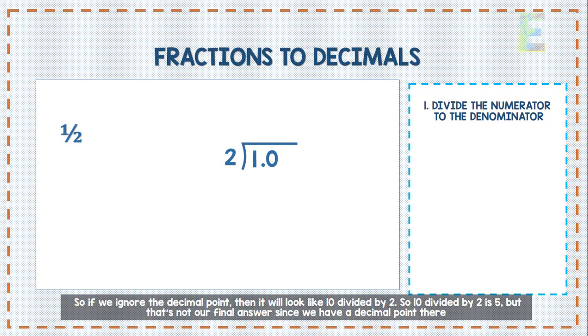So, if we ignore the decimal point, then it will look like 10 divided by 2. So, 10 divided by 2 is 5. But that's not our final answer since we have a decimal point there.